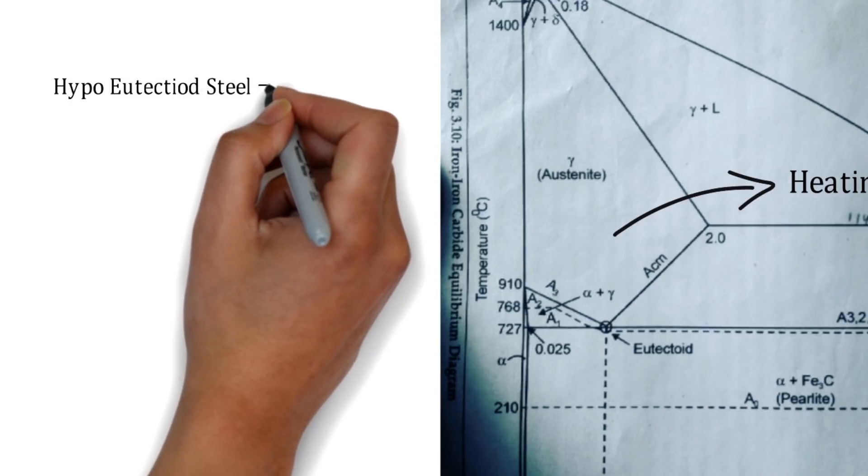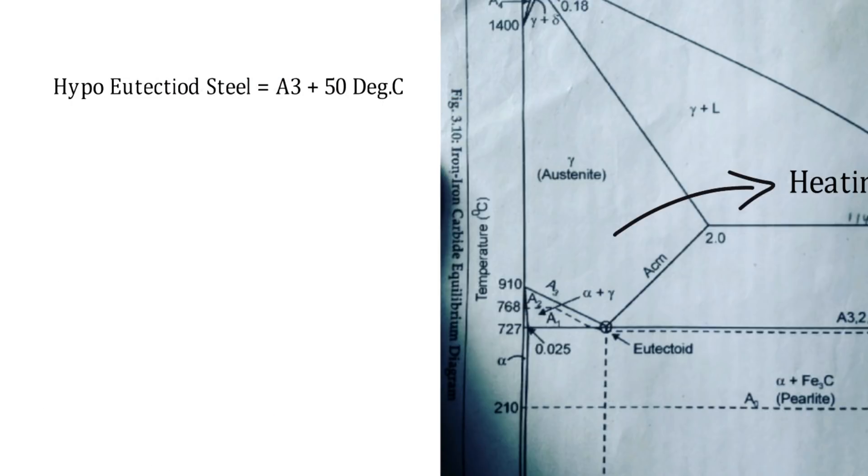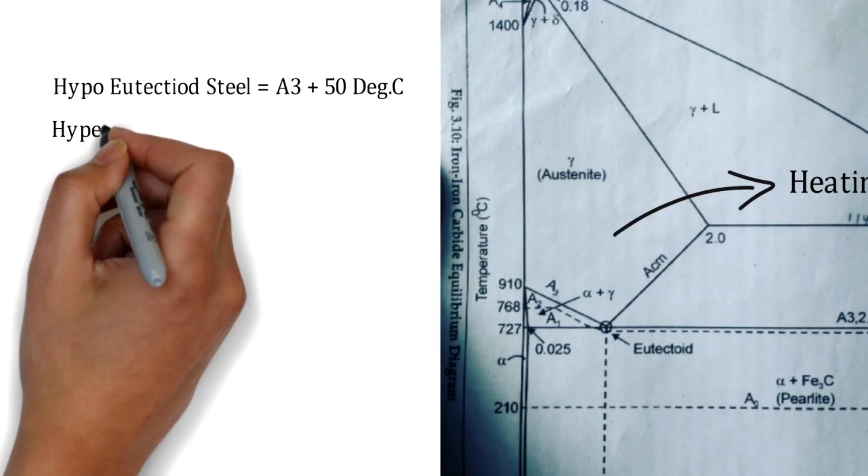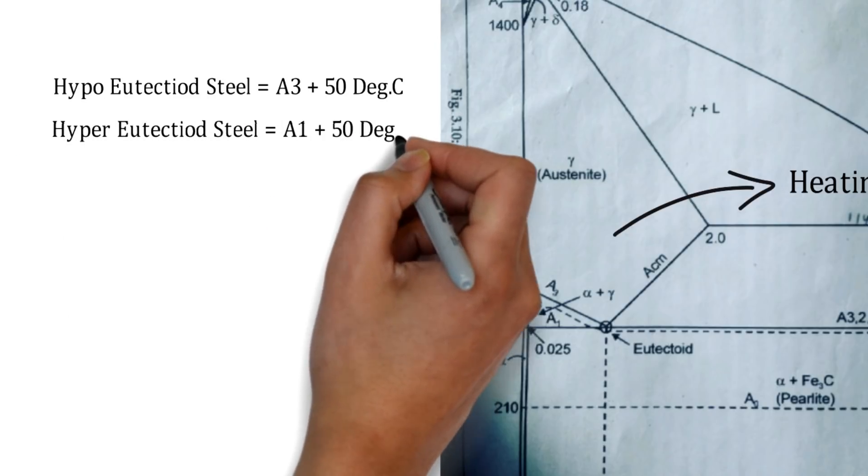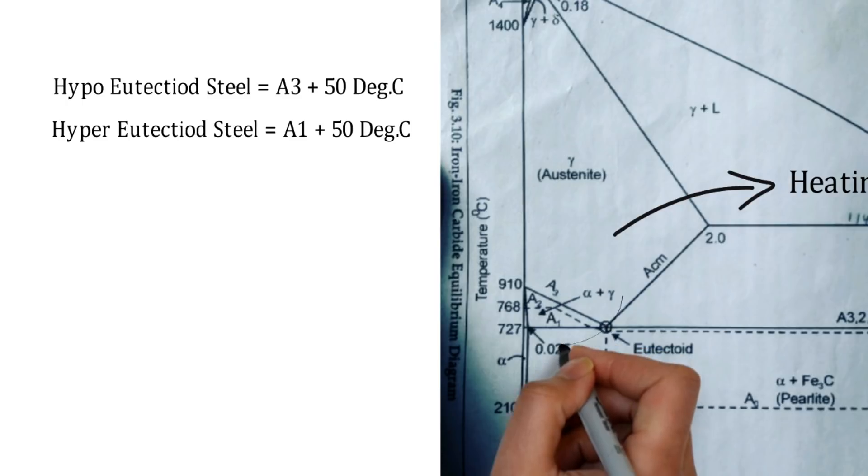The heating temperature will be for hypo eutectoid steels A3 plus 50 degrees Celsius, and for hyper eutectoid steels that will be A1 plus 50 degrees Celsius. So what is hypo and hyper eutectoid steels?